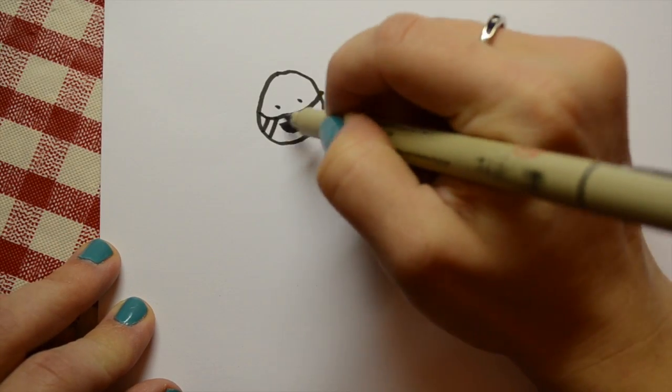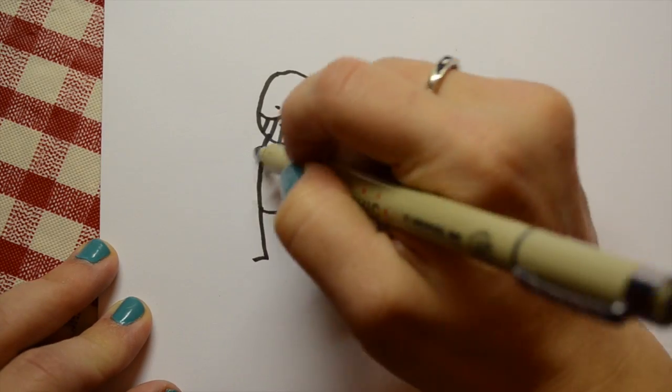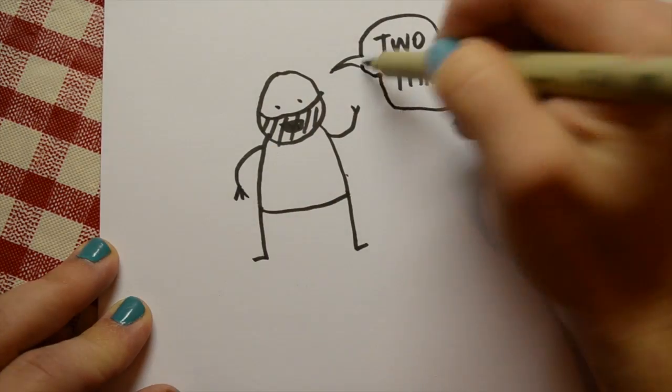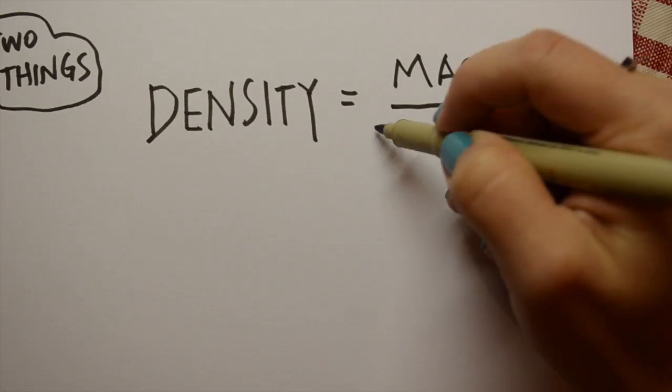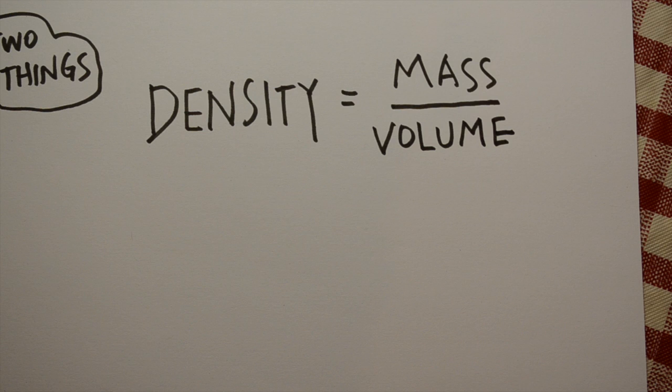Rick explains that density depends on two things: the mass of the object and the volume. The relationship looks like this. The density is equal to the mass divided by the volume.